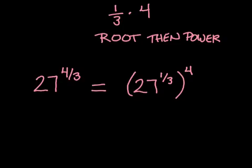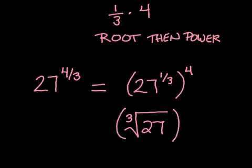Now, we're going to rewrite it in its radical form. Remember, 27 to the 1 third is the cube root of 27. It's just another way to write that same idea. This is going to be raised to the fourth power.